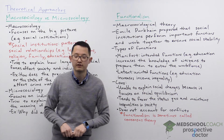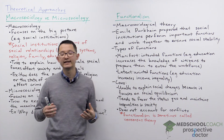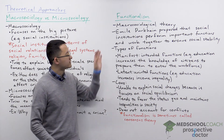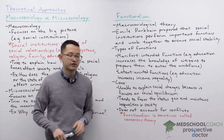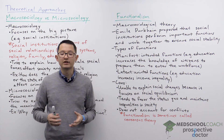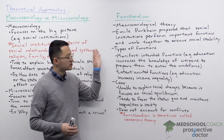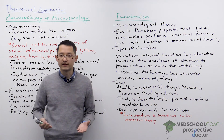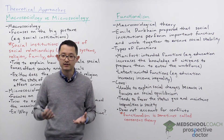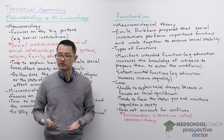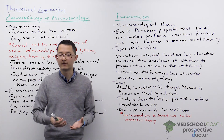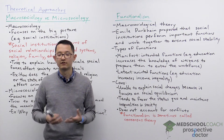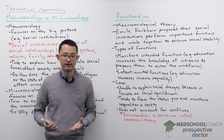Emile Durkheim proposed that society is like a living organism that has social institutions which perform important functions and work together to ensure social stability. This is like an organism with many organs — each organ performs a different function that is important for survival, and together these different organs work to allow the organism to survive.